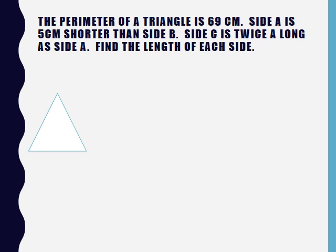Now, the perimeter of a triangle is 69 centimeters. Side A is 5 centimeters shorter than side B, and side C is twice as long as side A. Find the length of each side. So I'm just going to name them A, B, and C. Side A is 5 centimeters shorter than side B, so A would be B minus 5. And then C is twice as long as A, so C is twice that, 2 times (B minus 5).